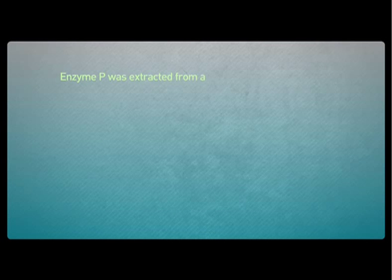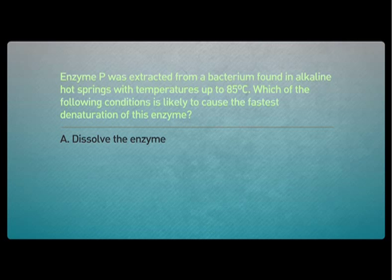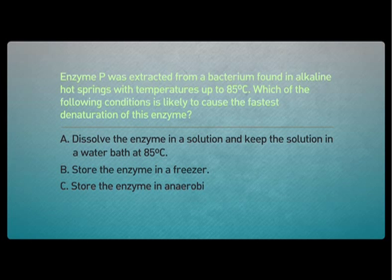Let's try another question. Enzyme P was extracted from a bacterium found in alkaline hot springs with temperatures up to 85 degrees Celsius. Which of the following conditions is likely to cause the fastest denaturation of these enzymes? A. Dissolve the enzyme in a solution and keep the solution in a water bath at 85 degrees Celsius. B. Store the enzyme in a freezer. C. Store the enzyme in anaerobic condition. D. Dissolve the enzyme in a solution of very low pH.